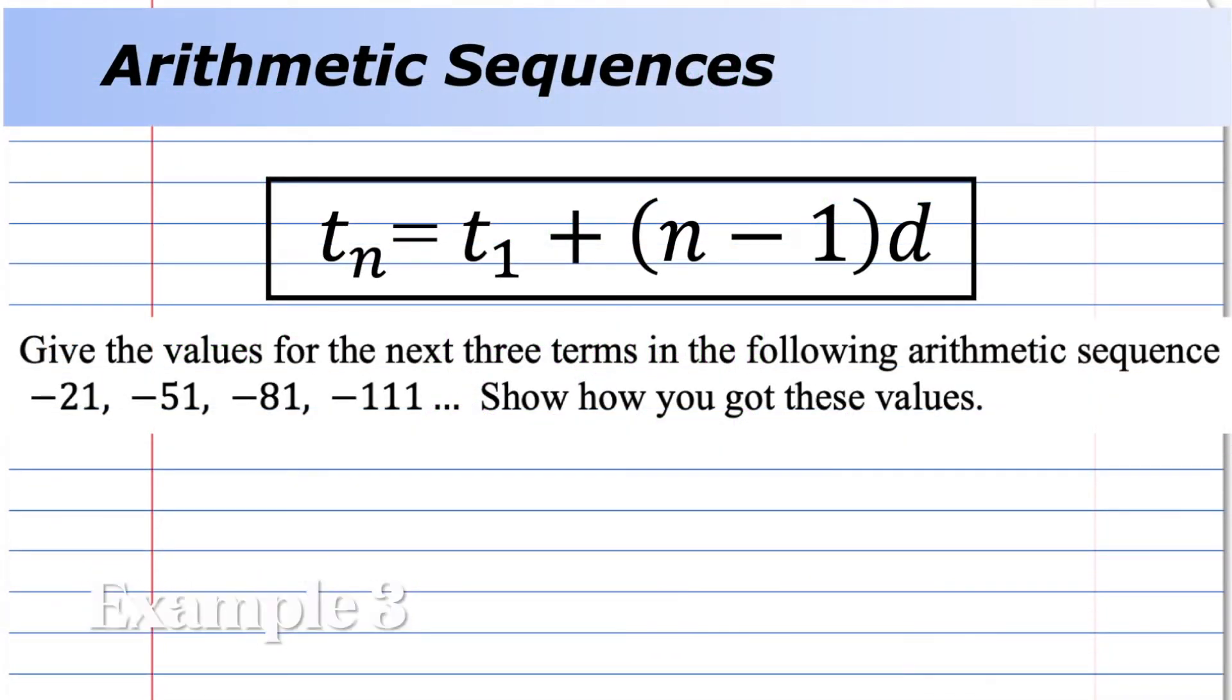Give the values for the next three terms in the following arithmetic sequence. Show how you got these values. One term, two terms, three terms, four terms. So we're going to go the second term minus the first term. So this is the first term, this is the second term, third term, fourth term.